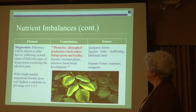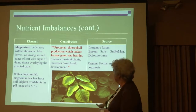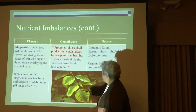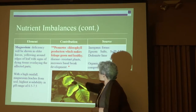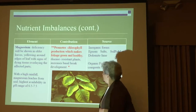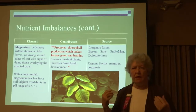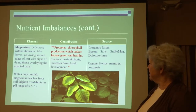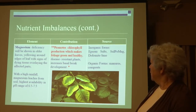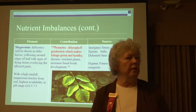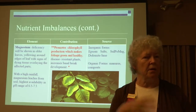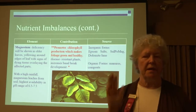Magnesium deficiency: the center part of the leaf stays green and the outer edges start losing color. It's still stiff and crisp — magnesium is going. You probably won't see that in California — we've got enough magnesium and not enough rain, so it's going to stay with us.